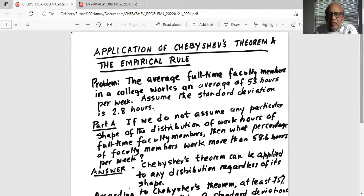Application of Chebyshev's Theorem and the Empirical Rule. Problem: The average full-time faculty member in a college works an average of 53 hours per week. Assume the standard deviation is 2.8 hours. If we do not assume any particular shape of the distribution of work hours of the full-time faculty members, then what percentage of the faculty members work more than 58.6 hours per week?